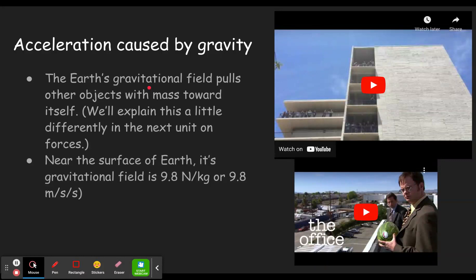Near the surface of the Earth, there is a gravitational field, and that value is 9.8 newtons per kilogram, meaning every kilogram of mass, so if your watermelon was one kilogram, it would experience 9.8 newtons of force. If it was two kilograms, it'd be almost 20 newtons of force.